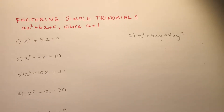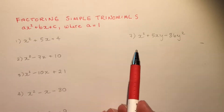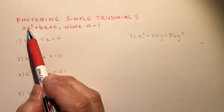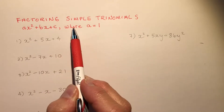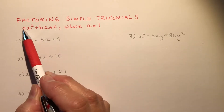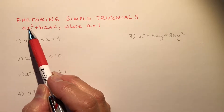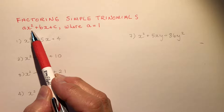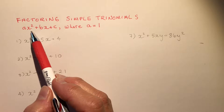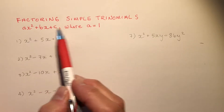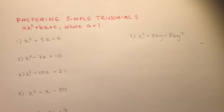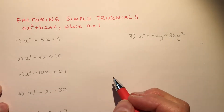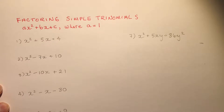We're going to work on factoring simple trinomials. A trinomial has three terms — the form ax² + bx + c, which is second degree. In all these questions, the a value is going to be 1, which makes them simple — these are the easiest trinomials to factor. You might remember from grade 10 that this gives you the roots of the equation or the x-intercepts. It's very important to master these simple ones before we move on to complex trinomials where a isn't 1.